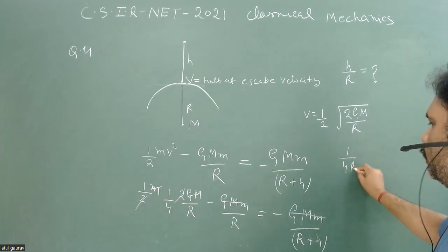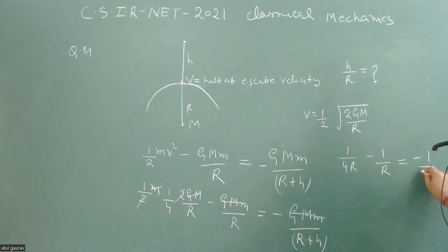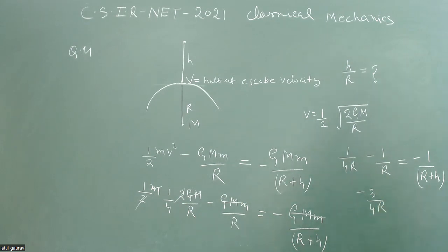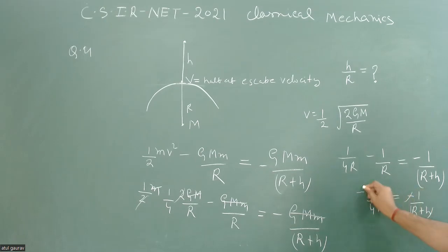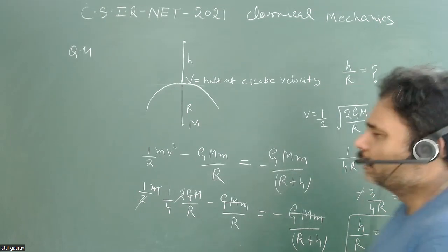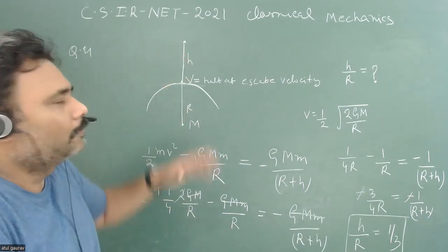We get 1/(4R) − 1/R = −1/(R+h), which simplifies to −3/(4R) = −1/(R+h). From this we can easily obtain h/R = 1/3. The algebra is straightforward once the concept is clear.